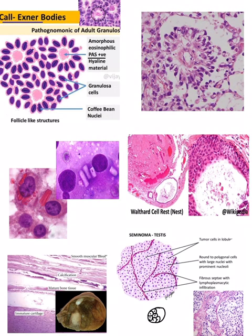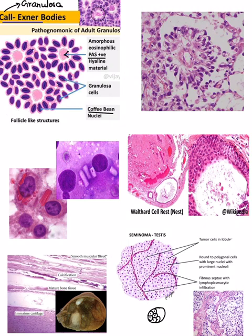Now coming on to the histopathology images. First, the Call-Axner body — found in granulosa cell tumor, remember 'the granny.' To identify it: there is amorphous eosinophilic material that is PAS-positive inside, surrounded by coffee bean nuclei and granulosa cells.